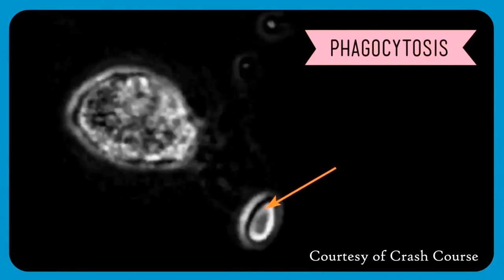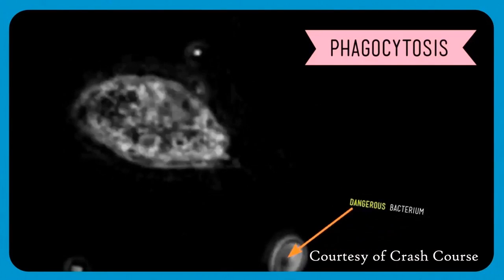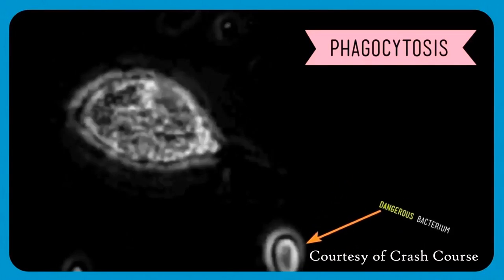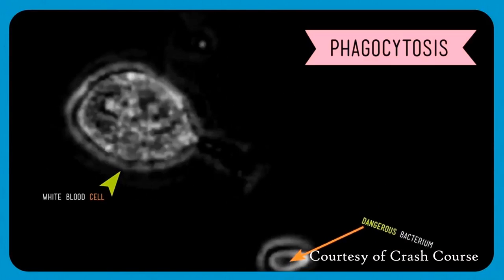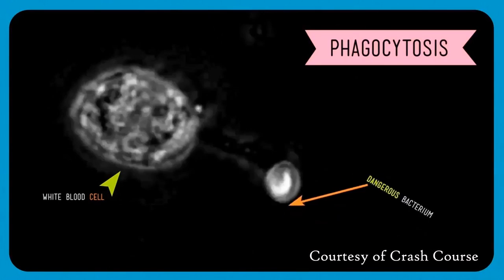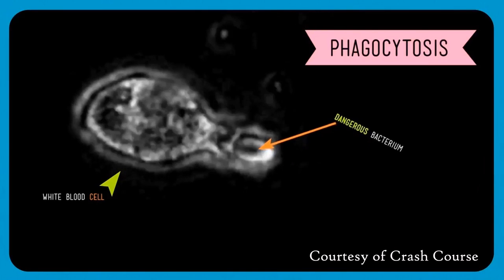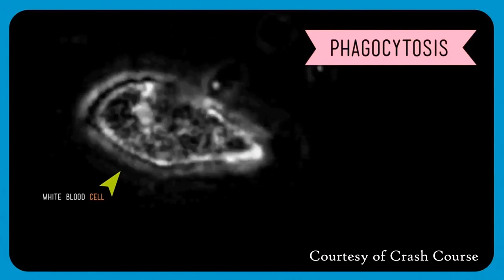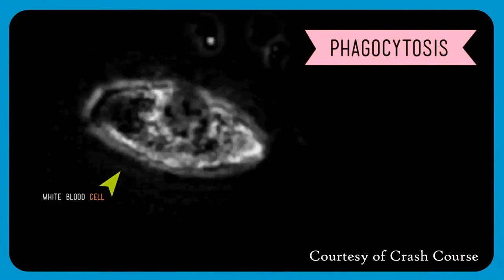As you can see, there's a dangerous bacteria lurking around and there's a white blood cell that senses the presence of it, involving its membrane backwards and then eventually enclosing the bacteria inside the cell.